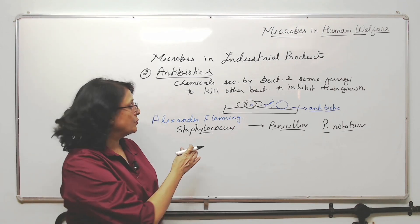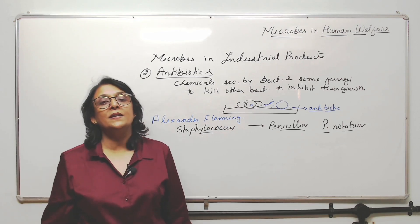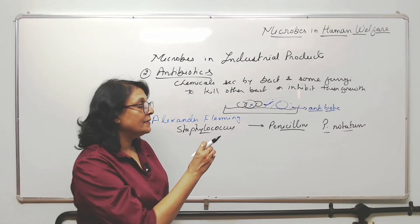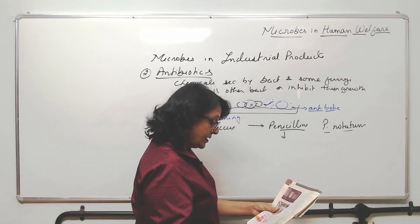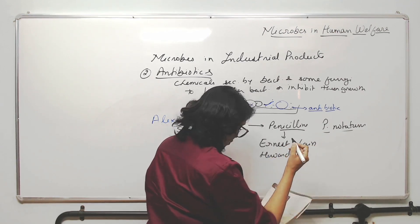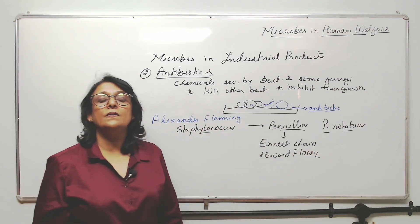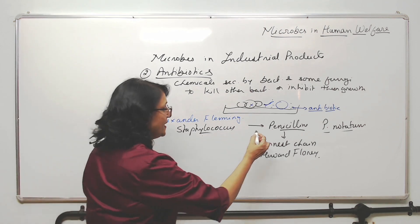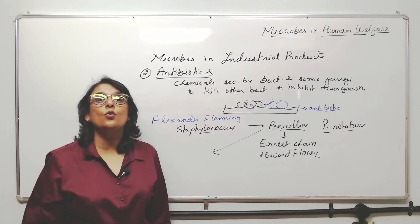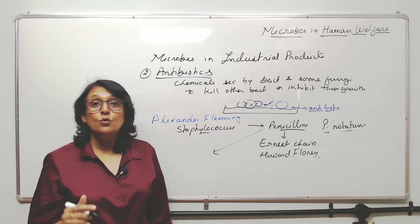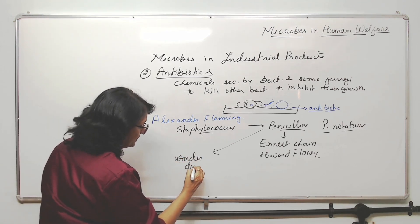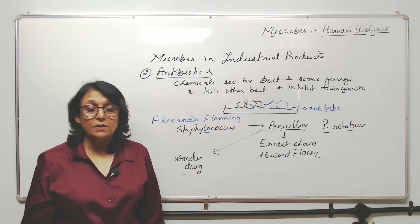Because the fungus was Penicillium notatum, that antibiotic was called penicillin. So Alexander Fleming was working with Staphylococcus but ended up discovering penicillin. Two other scientists — Ernest Chain and Howard Florey — actually gave the therapeutic, that is the medicinal, importance of this. Penicillin was used enormously after World War II — the wounded soldiers' wounds were getting infected, and penicillin was used and was very, very effective. So it was called a wonder drug.